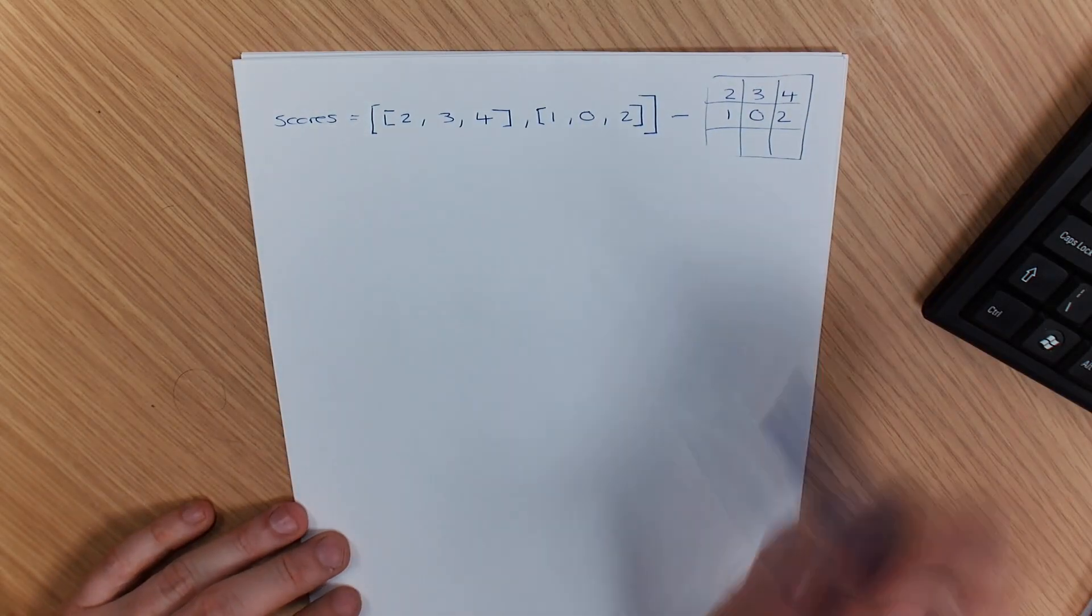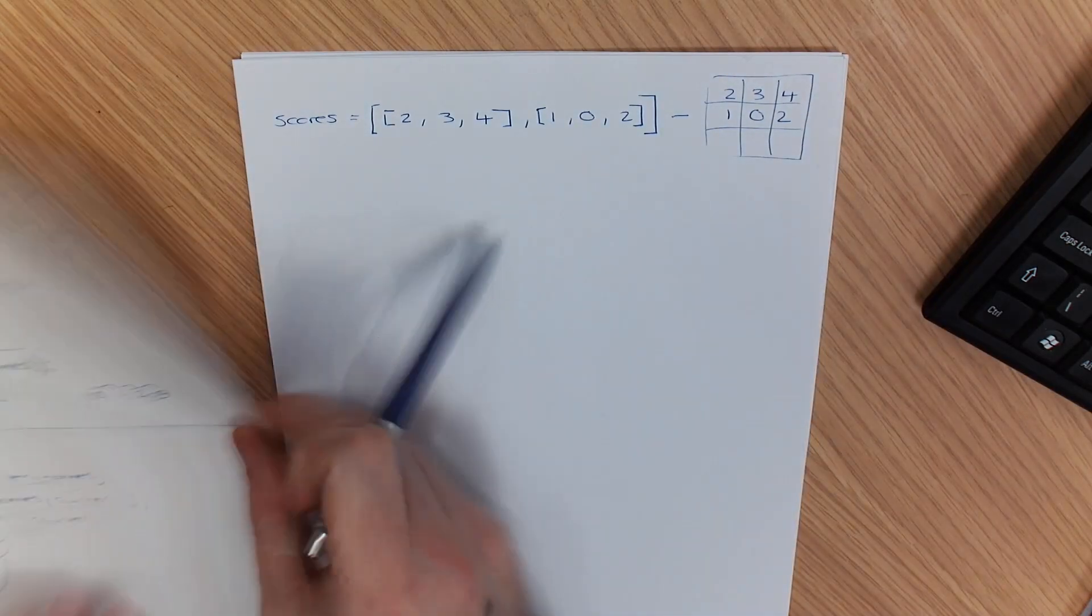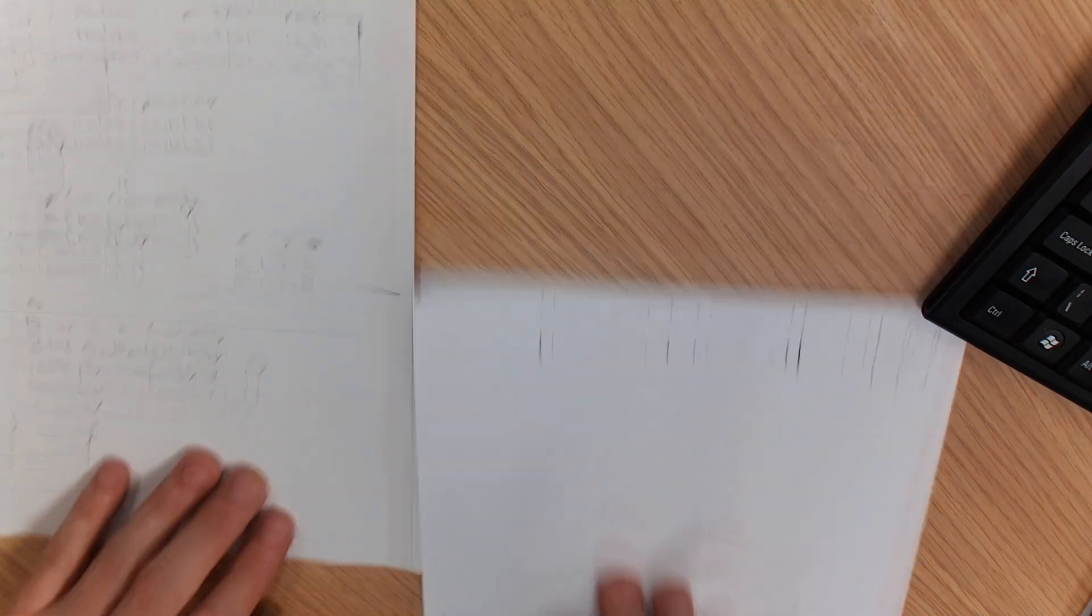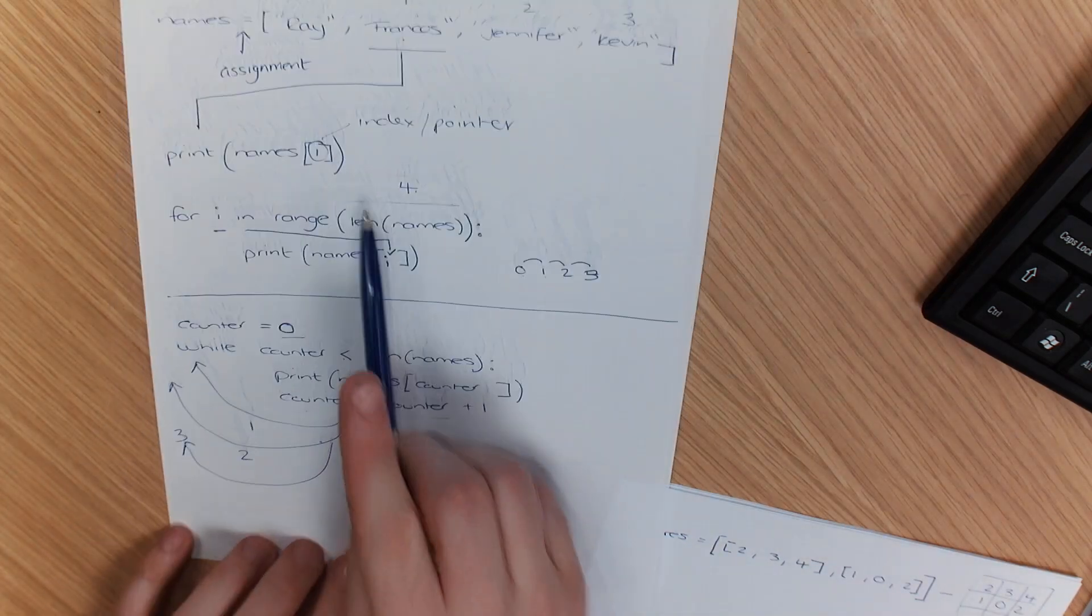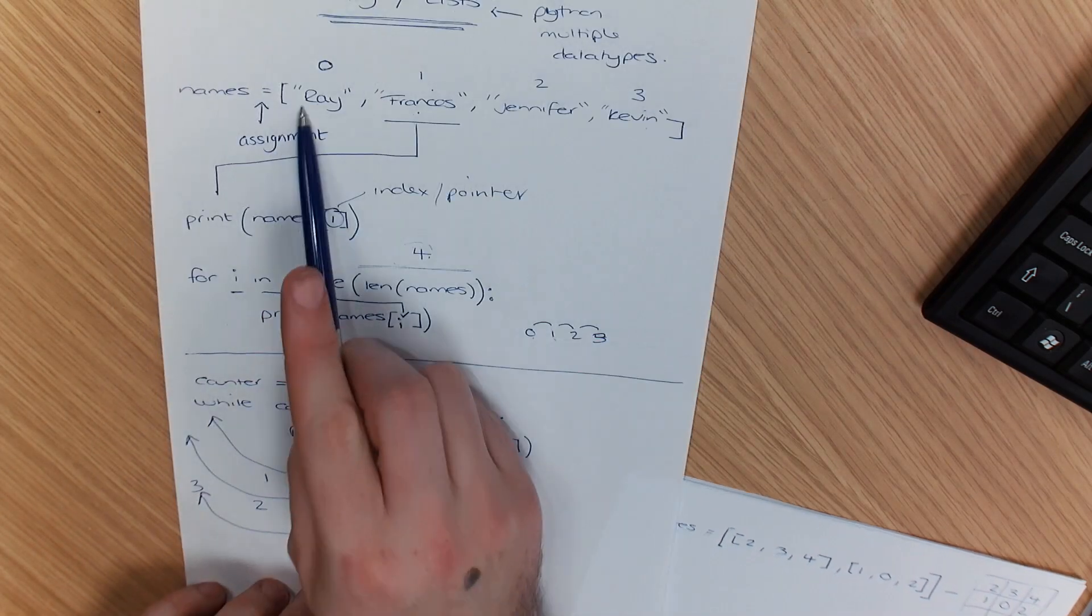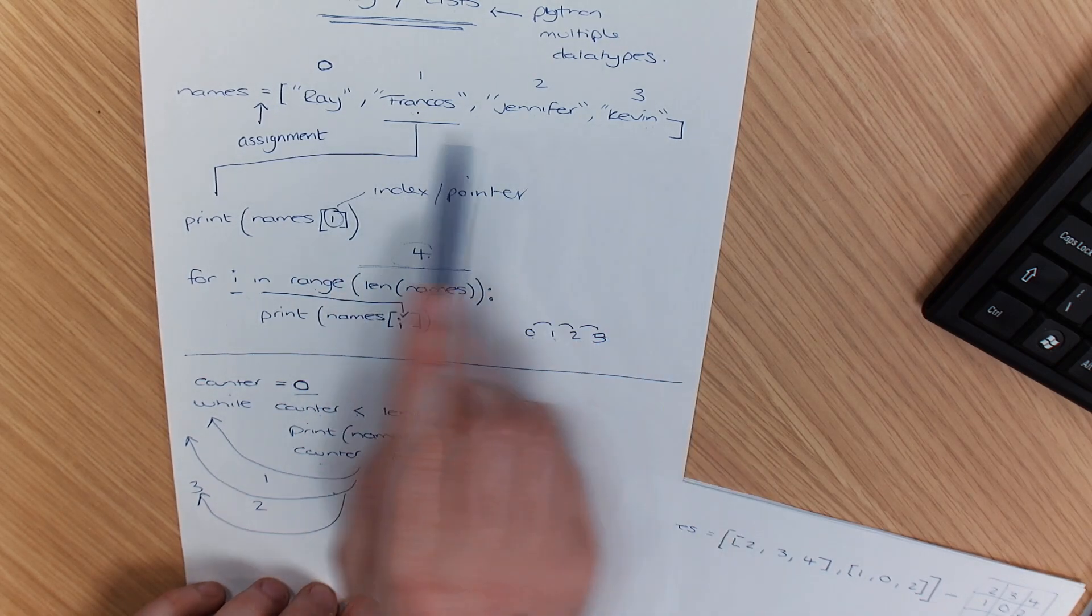So this is part two of the video where we went over arrays and lists. In part one, remember that we have our list set up but this is a single dimensional array.